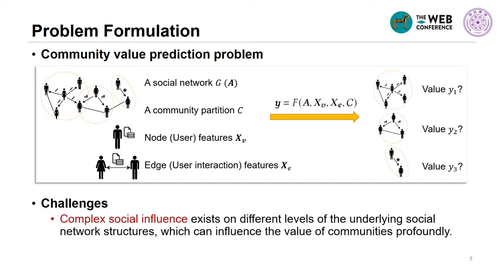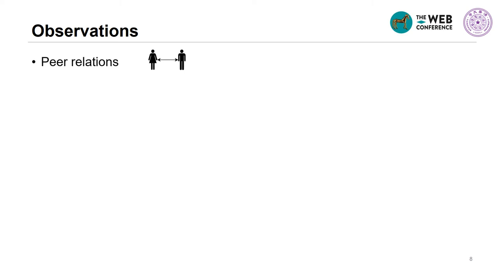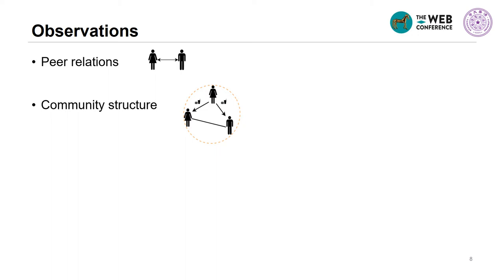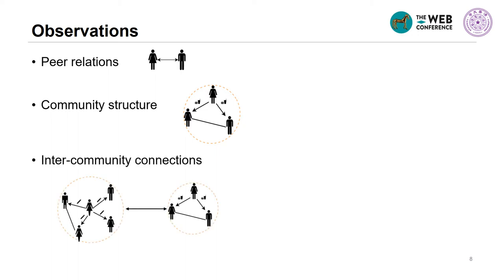The main challenge lies in the fact that complex social influence exists on different levels of the underlying social network structures, which can influence community value profoundly. Specifically, we identify three levels of structures as important. The first level is pure relations — for example, it is likely for one to purchase under a best friend's recommendation. The second level is community structure beyond pairwise relations; the denser the network, the easier it is for social influence to diffuse across the community, and thus the higher the community value. Third, inter-community connections can also be a crucial factor — high-value communities' purchase trends may pass to low-value communities through inter-community connections, thereby increasing their value.